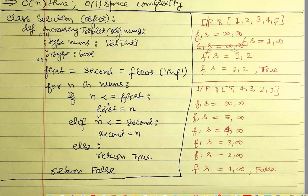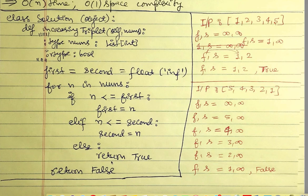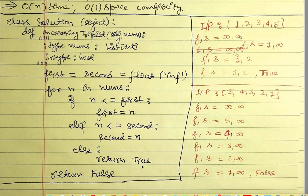At any time, `first` holds the lowest number seen and `second` holds the second lowest — a number higher than `first` but as low as possible. When we encounter a third number larger than both, neither condition satisfies and we fall to the else branch and return true. If we iterate through the entire array without finding such a triplet, we return false.